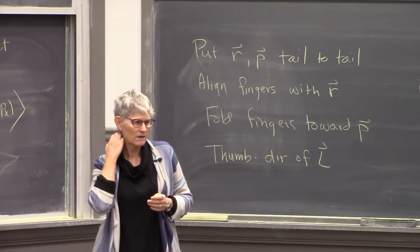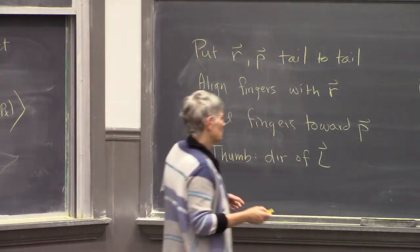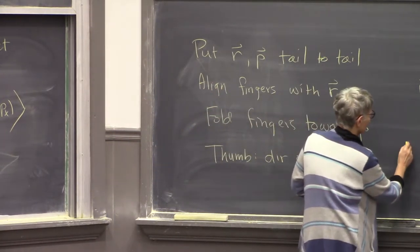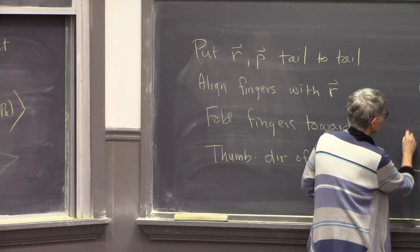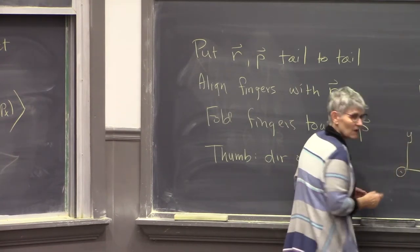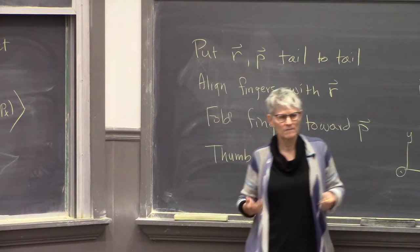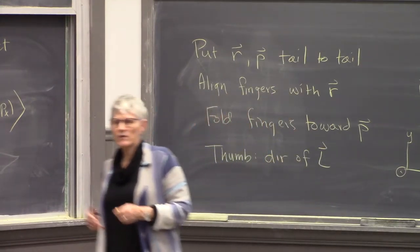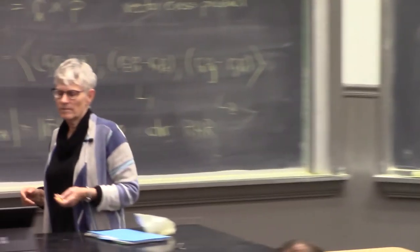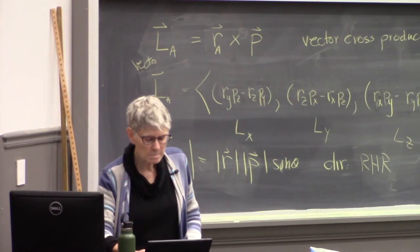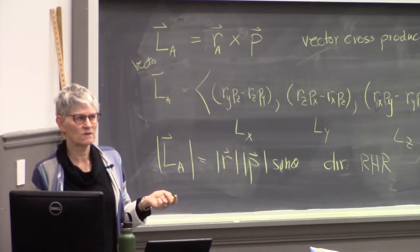Why does plus z point this way? Because we use a right-handed coordinate system: x, y, z out of the board is our standard. We always use a right-handed coordinate system.